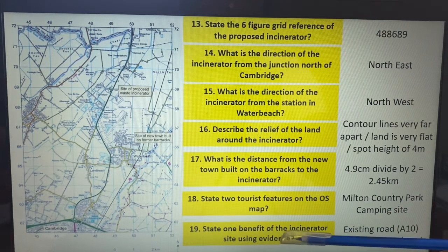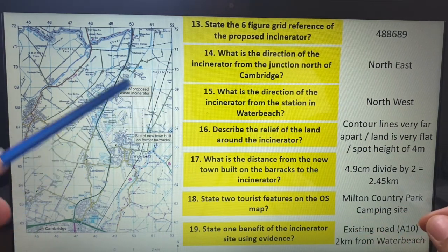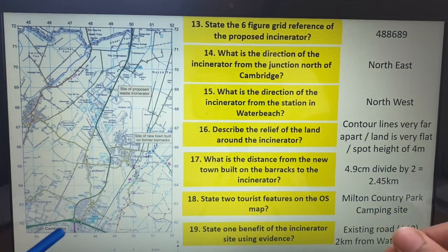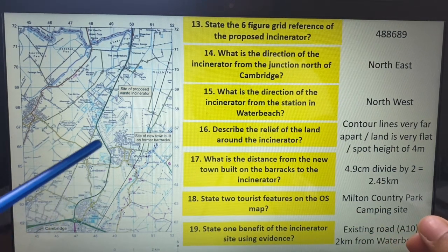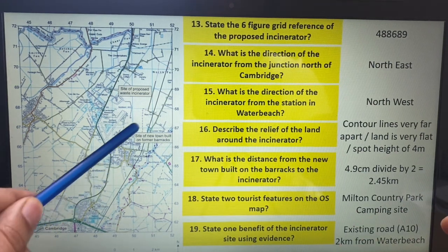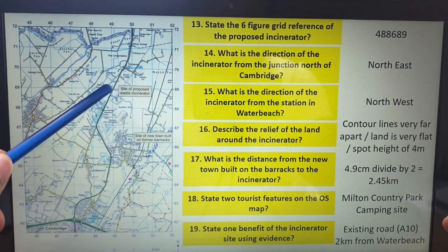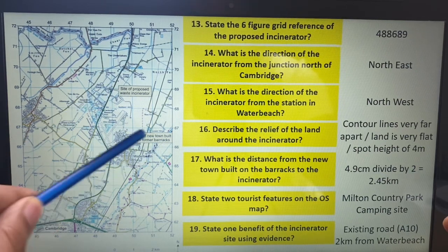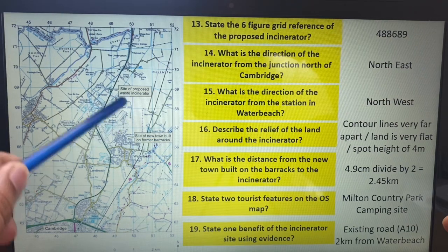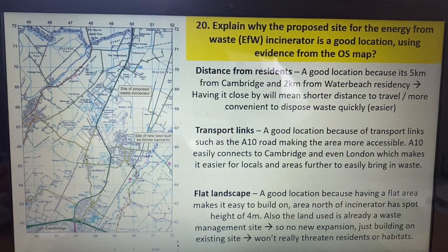Something a bit different: what's the benefit of the incinerator on this site? Use some evidence. The first is there's an existing road — can you see this green road, the A10? That's a good thing, making the area accessible. Also, Water Beach is the nearest residential area, about two kilometres away. That's a safe distance — imagine if it was right next to it, especially if you're going to be burning waste. The video you saw earlier had one-marker and two-marker questions. You could get something bigger — you could get a four-marker. I doubt you'll get a six based on map work.